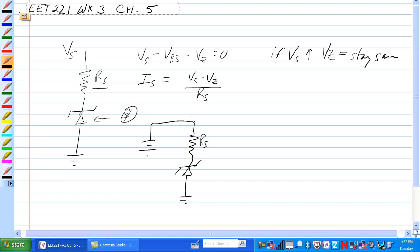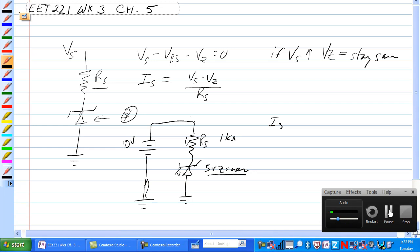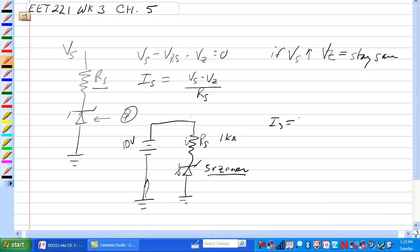Current goes from the supply through RS, through the Zener, and back to the supply. If this is 10 volts, we have a 5 volt Zener, manufacturer stated 5 volt Zener, this is 1K Ohm.